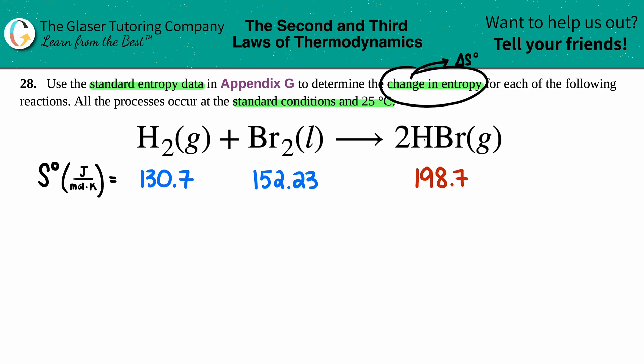Well, that's the formula right here. Delta S for the whole entire reaction, the change in entropy for the whole entire reaction, is the sum—that's what this symbol means—the sum of all your products minus the sum of all your reactants. So basically it's products minus reactants.